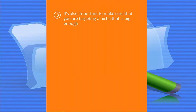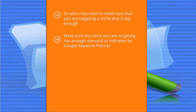It is also important to make sure that you are targeting a niche that is big enough. There are lots of advertisers willing to pay more than $20 per click for structured settlement keyword traffic, but the volume of searches for that niche is actually quite low. Make sure the niche you are targeting has enough demand as indicated by Google Keyword Planner, which tells you both how much advertisers pay per click and the volume of searches. You are looking for a nice combination of decent commercial value with decent traffic volume.